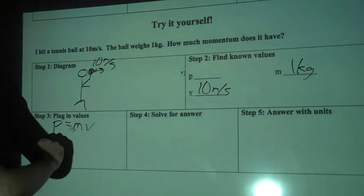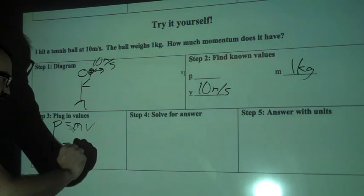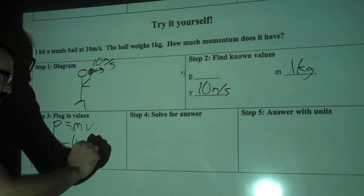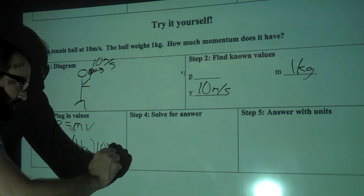I don't know my momentum, but I know my mass and my velocity. So P equals, my mass is 1 kilogram, and the velocity is 10 meters per second.